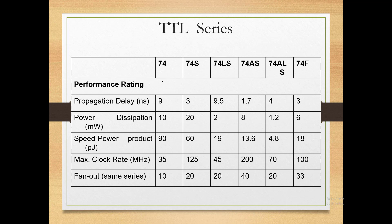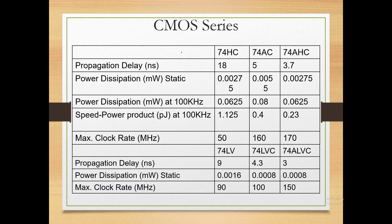Here are the performance ratings for TTL series — 74 standard, Schottky (S), Low Power Schottky (LS), Advanced Schottky (AS), Advanced Low Power Schottky (ALS), and Fast (74F). Among these, Fast (74F) has the lowest propagation delay. If we look at speed-power product, 74ALS has the lowest — making it the best performer among all TTL series. For clock frequency: 74S supports up to 70 MHz, 74AS up to 200 MHz, 74ALS up to 20 MHz, 74F up to 33 MHz, 74LS up to 20 MHz, and standard TTL up to 10 MHz.